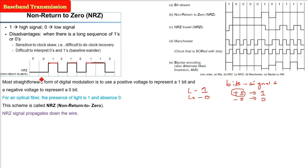And wherever there is a low signal, that is 0. This is also 0 and just combine this. This is non-return to 0 or NRZ. 1 high signal, 0 low signal.